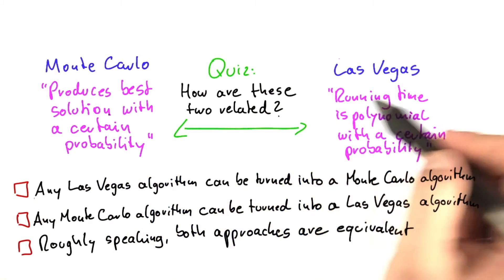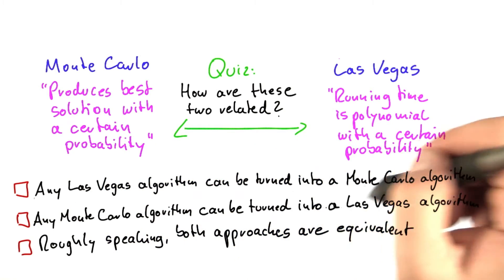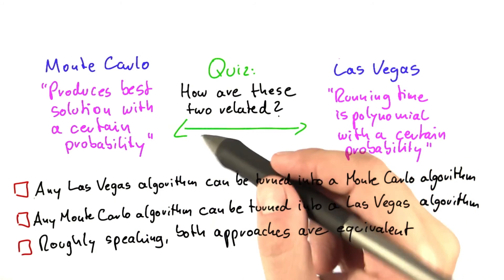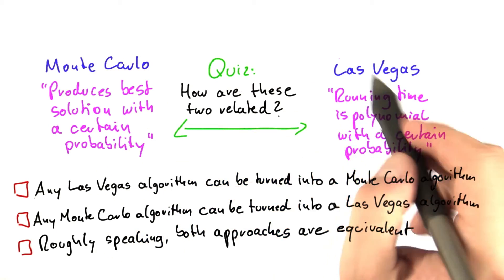Is it the other way around that any Monte Carlo algorithm can be turned into a Las Vegas algorithm? Or is it even that the two approaches are, roughly speaking of course, more or less the same?